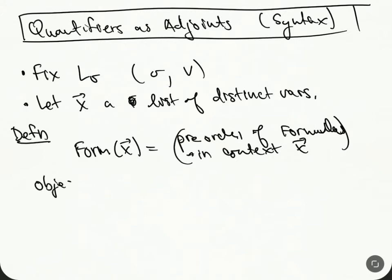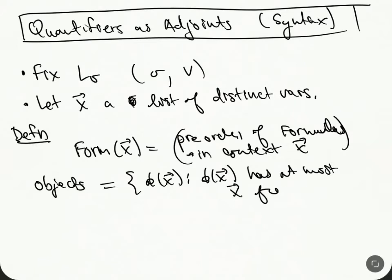here are going to be the set of phi of X where has at most X being free. So we talked about free variables.